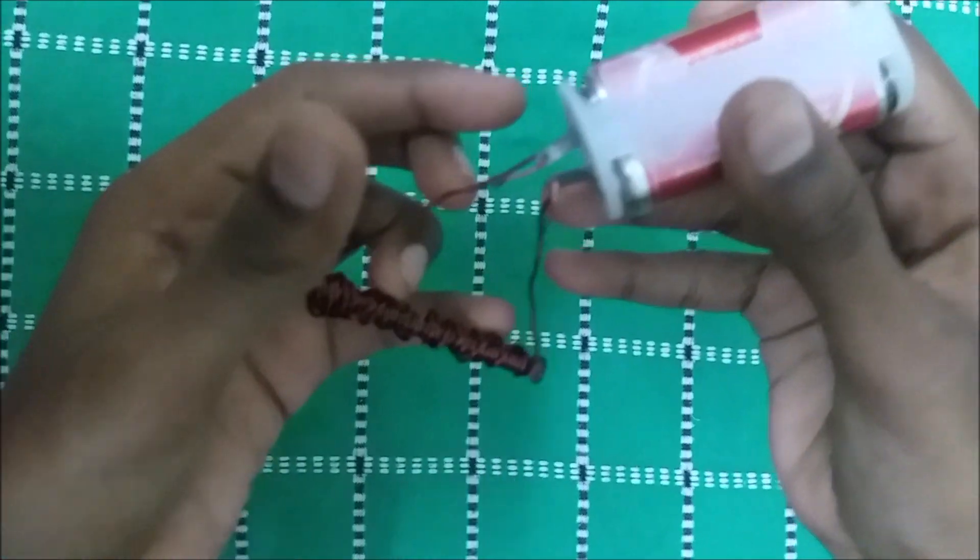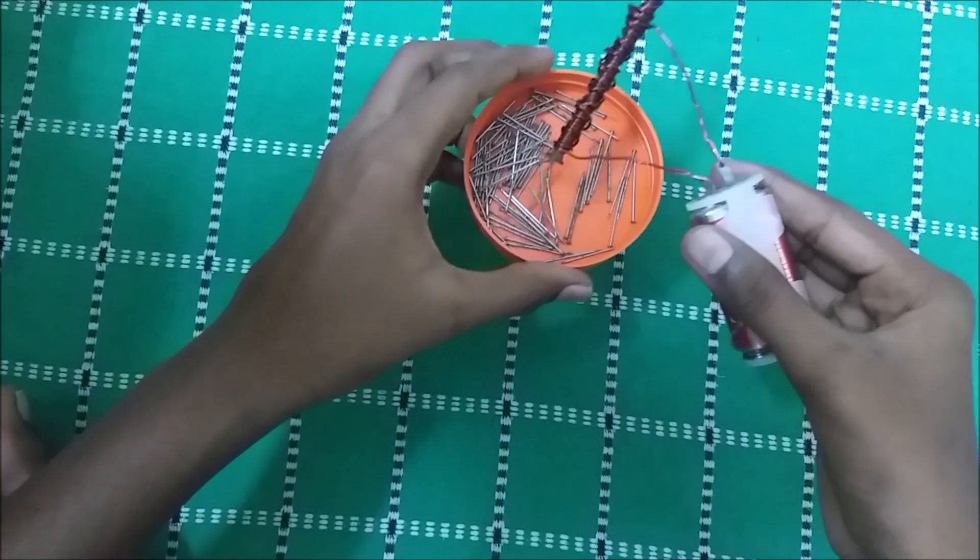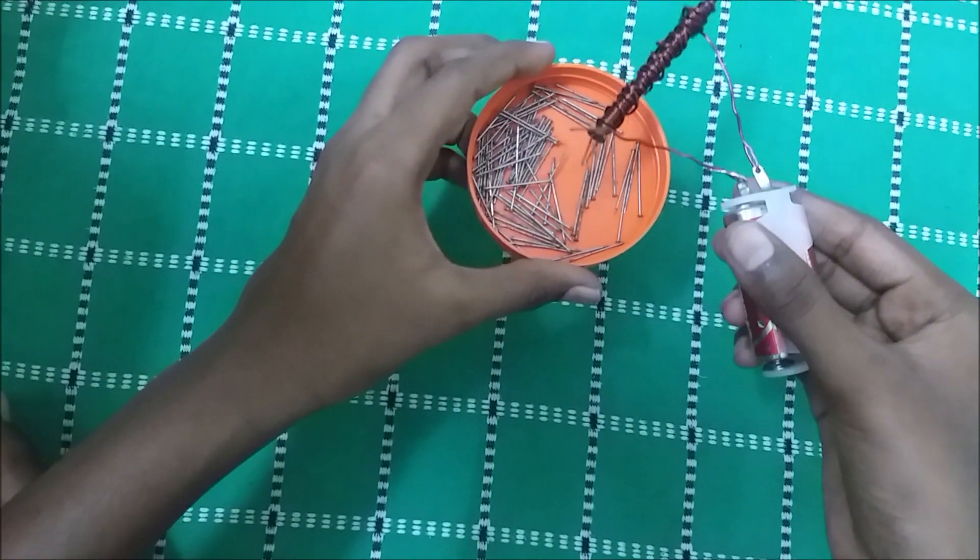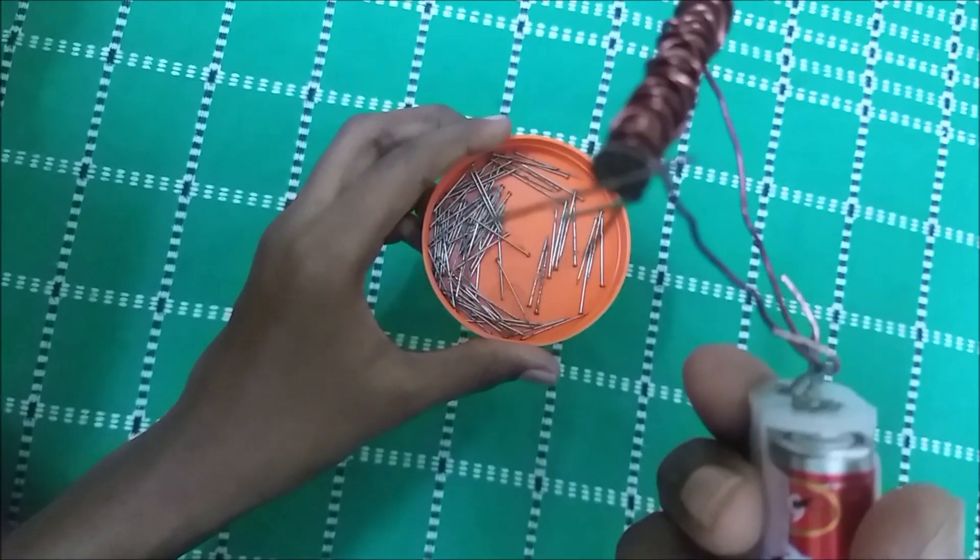Our electromagnet is done. Let's test it. Take some iron pins and bring the electromagnet near to it. You can see that the iron nail attracts the pins.